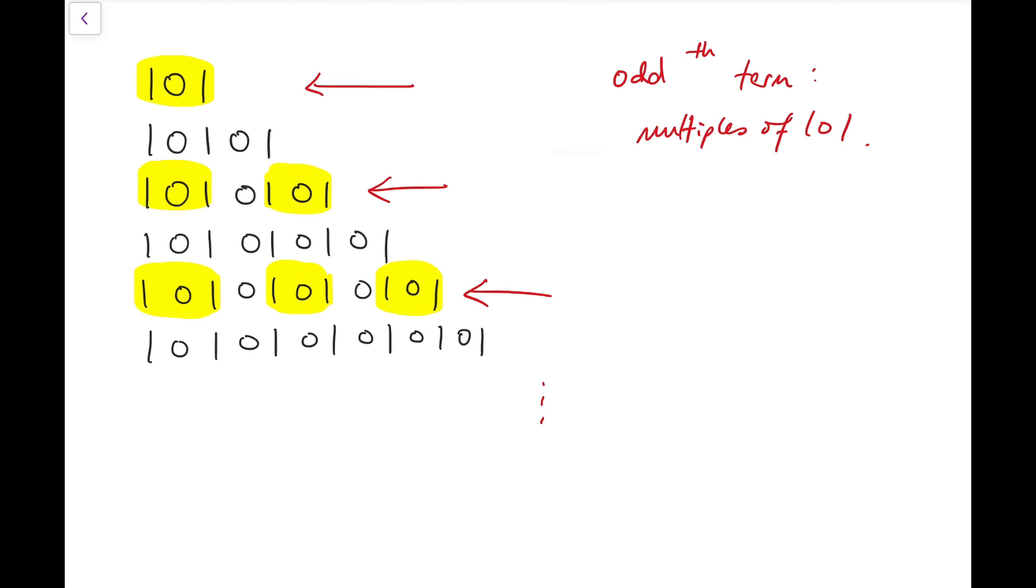Now it comes to the even terms, which means these numbers. Now these numbers are slightly more complicated. Let me take the second term as an example: 10,101.